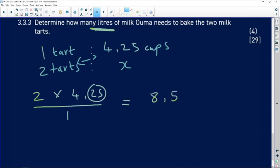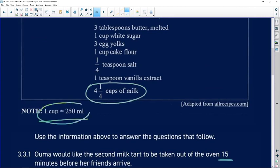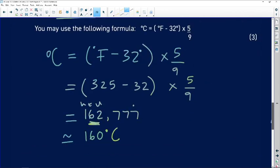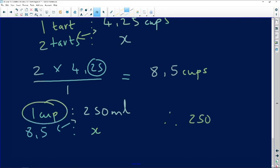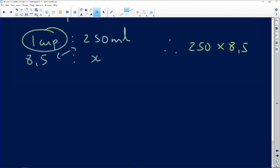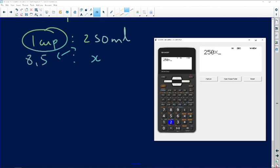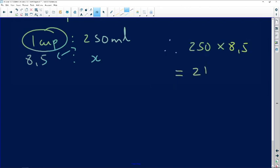But we want it in liters, and with the information that we've been given up here, we know one cup is 250 milliliters. One cup is 250 milliliters. So 8.5 cups cross multiplication and divide. 250 times 8.5, 250 times 8.5. 250 times 8.5 cups is 2,125 milliliters.